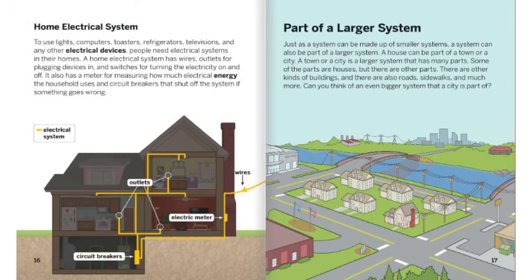Home electrical system. To use lights, computers, toasters, refrigerators, televisions, and other electrical devices, people need electrical systems in their homes. A home electrical system has wires, outlets for plugging devices in, and switches for turning electricity on and off. It also has a meter for measuring how much electrical energy the household uses, and circuit breakers that shut off the system if something goes wrong. So here we have outlets, electrical meter, and circuit breakers and wires.